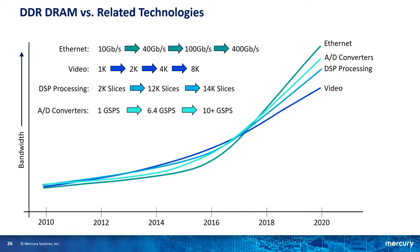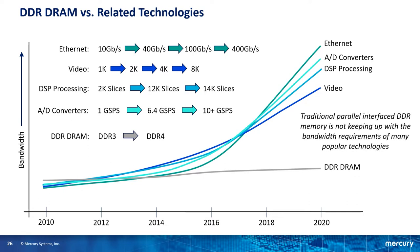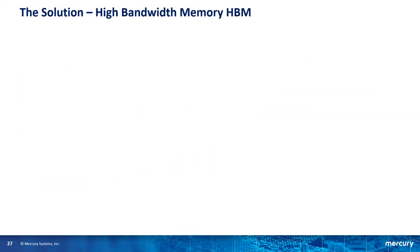If we look at DDR DRAM, we've gone from DDR3 to DDR4 with a few variations, but we've really only seen about a doubling of bandwidth. DDR5 is just starting to make an appearance, but from side-by-side tests I've seen, DDR5 is only about 5 or maybe 10% faster than DDR4 depending on which benchmarks you look at. In the next few years DDR5 will start getting clocked faster. But for now, traditional parallel interface DDR memories are just not keeping up with the bandwidth requirements of many popular technologies. A possible solution is high bandwidth memory, or HBM.